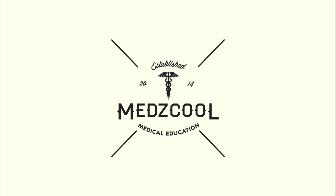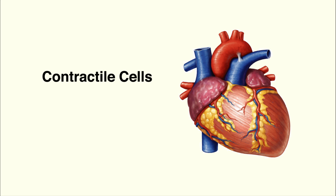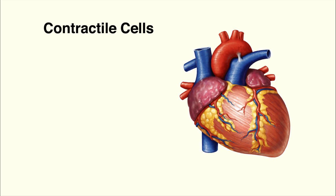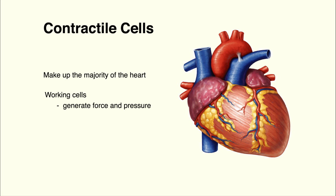The heart is composed mainly of two different types of tissue: the contractile cells and the conducting cells. Contractile cells make up the majority of the atrial and ventricular tissues and are responsible for the working cells of the heart. The action potentials or electricity that pass through these cells lead to the generation of force and pressure in order to contract and eject blood from the heart.